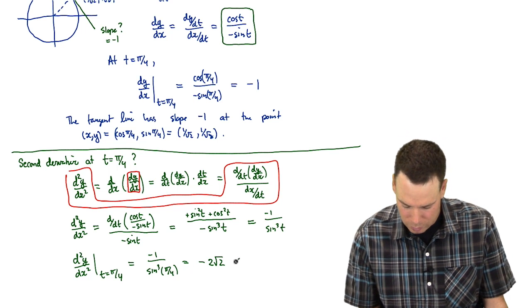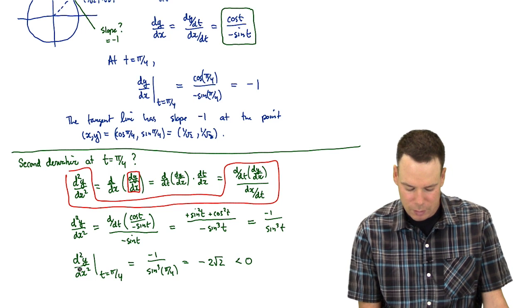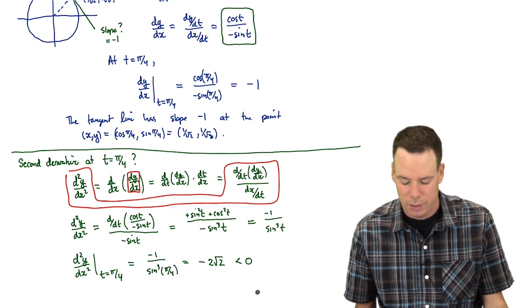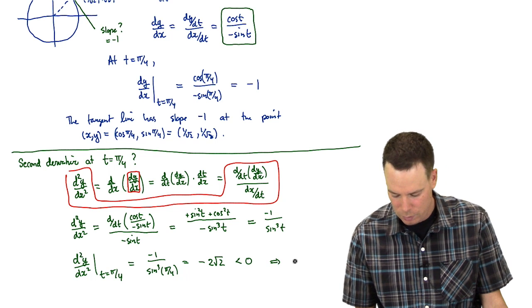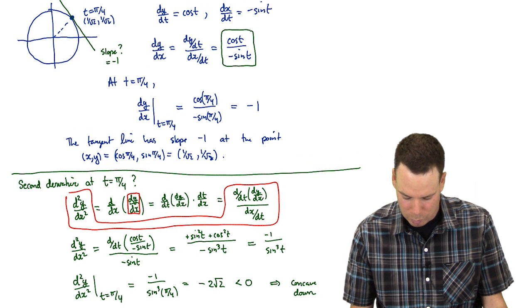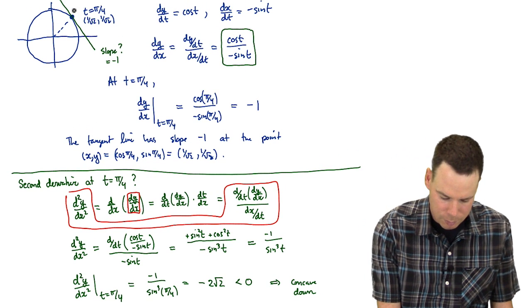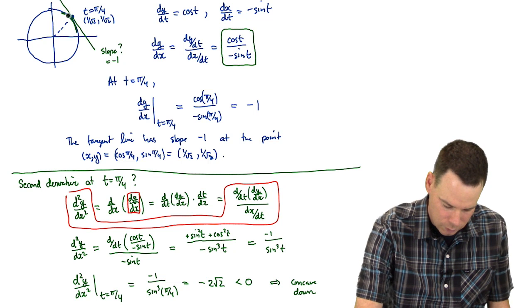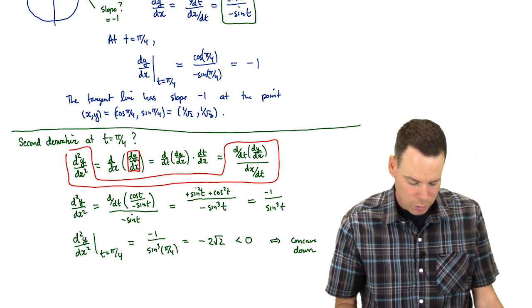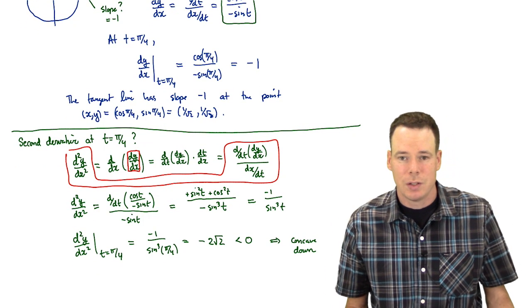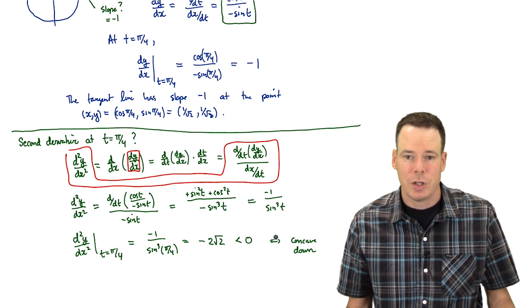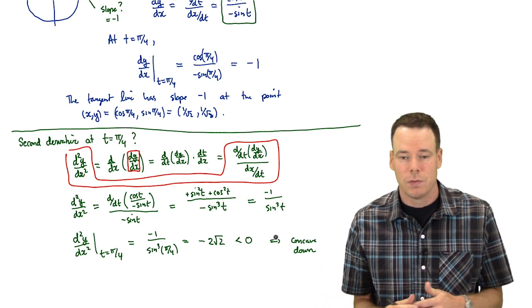The second derivative is negative 2√2 — notice it's negative. A negative second derivative means the curve is concave down. Looking at our diagram, at that particular point on the unit circle at t equals π/4, yes, the curve is concave down there. This gives an illustration of how to work out a second derivative for a parametric curve and the information it gives you about concavity.